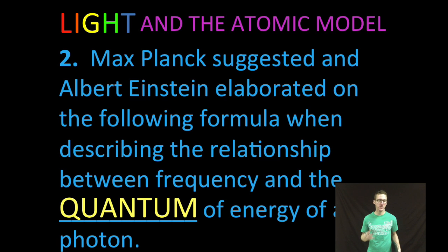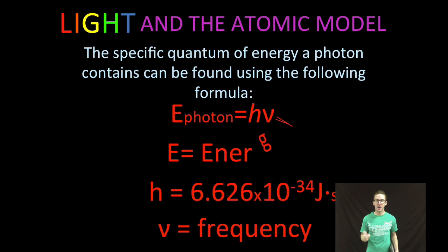Now, it was Max Planck who originally suggested, and some guy named Albert Einstein who elaborated on a formula that I'm about to show you that describes the relationship between frequency of light and the quantum of energy, or the amount of energy of a photon. So it turns out that the specific amount or quantum of energy that a photon contains can be found using the following formula. Energy of photon is equal to Planck's constant times frequency.